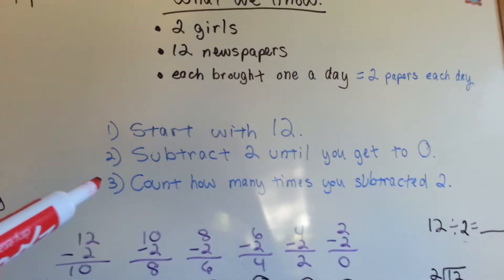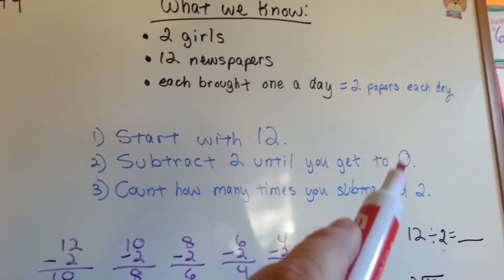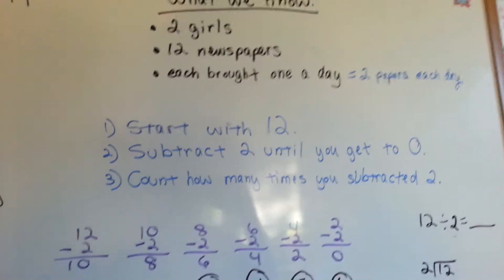So, we're going to start with the 12, and we're going to subtract two, the two papers each day, until we get to zero. Then we're going to count how many times we subtracted the two.